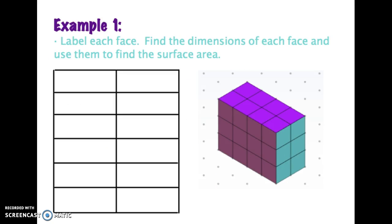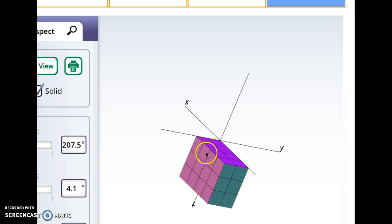I kind of like to organize in a chart format, but you wouldn't necessarily have to do that. Our goal is to label each face and then find the dimension of each face and use those dimensions to find the surface area. For example, when I look right here, this face to me looks like the top, so I'd probably call it the top face, and the dimensions of it are four by two.